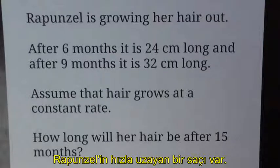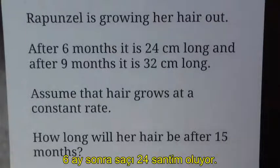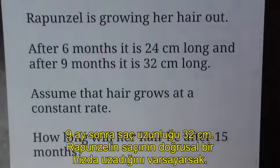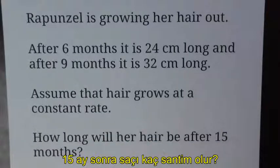Rapunzel is growing her hair out. After six months, it is 24 centimeters long and after nine months, it is 32 centimeters long. Assume that hair grows at a constant rate. How long will her hair be after 15 months?